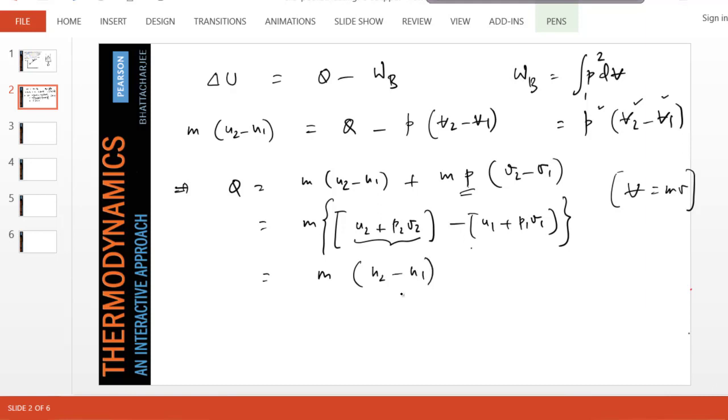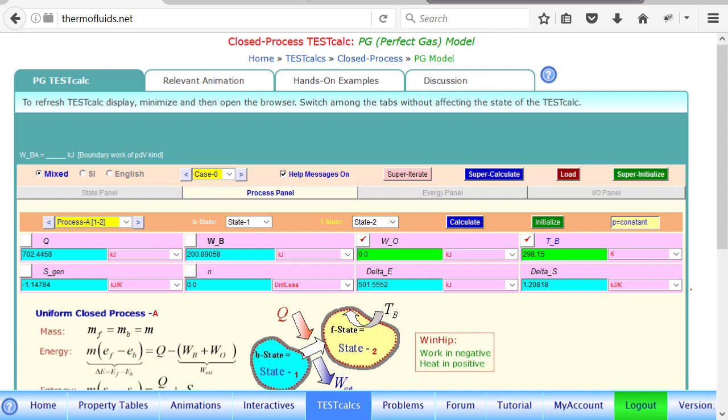And if you recall the definition of enthalpy, we end up in a simpler formula: Q equals m(h2 - h1). And for the PG model—so far it's model independent—it's simply cp times (T2 - T1) if we go and pick up the value of cp and cv for air.